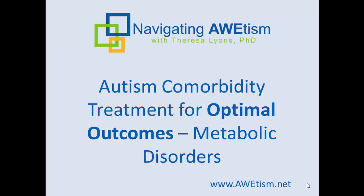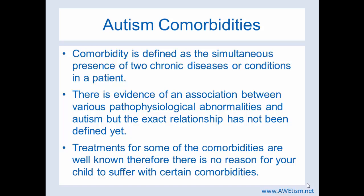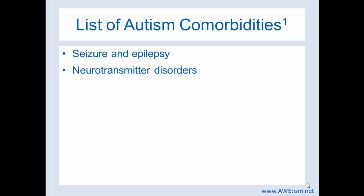Let's get straight to the science of comorbidities. Comorbidity is defined as the simultaneous presence of two chronic diseases or conditions. And there are treatments for comorbidities. The list of comorbidities includes seizures and epilepsy, neurotransmitter disorders, sleep disorders, and metabolic disorders.